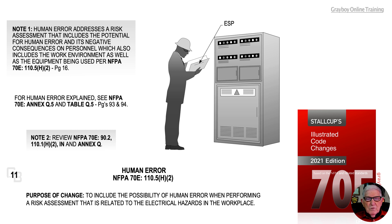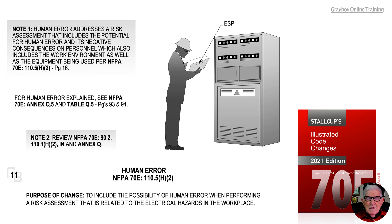This illustration deals with human error in accordance with NFPA 70E 110.5 H2. The purpose of the change was to include the possibility of human error when performing a risk assessment that is related to the electrical hazard in the workplace.